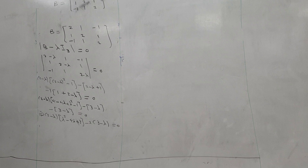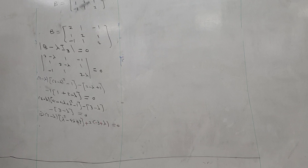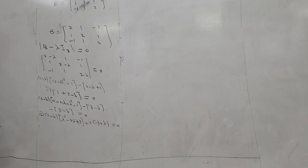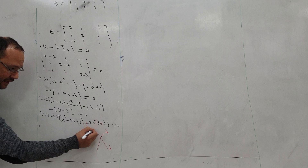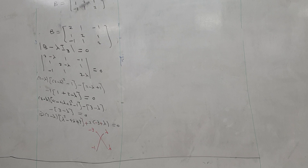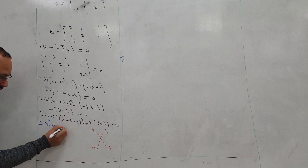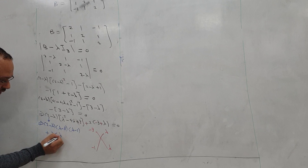We multiply the negative sign inside the bracket so it becomes plus, minus, plus. The quantity inside the bracket can be factorized as a trinomial: lambda squared minus 4 lambda plus 3 factors as (lambda minus 3)(lambda minus 1). So the result of factorization gives: (2 minus lambda)(lambda minus 3)(lambda minus 1) plus 2 times (lambda minus 3) equals 0.